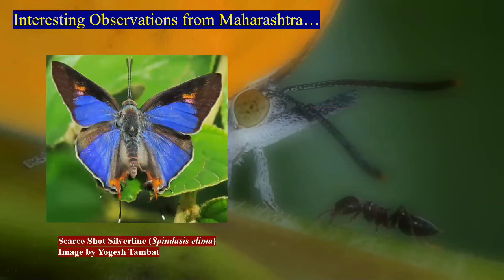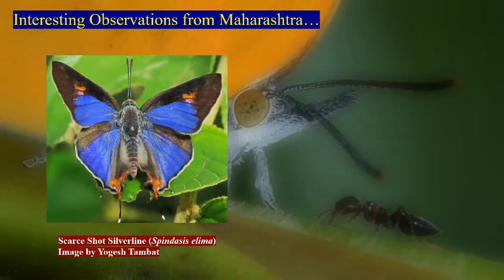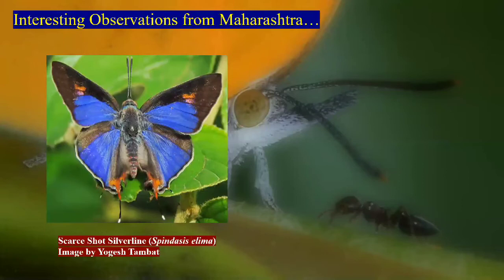Four years back in Nashik, star shot silverline was reported for the first time by Yogesh Tambade. The open-wing shot of the butterfly confirmed its confident presence in that area. It is one of the very rare species of butterflies in India. Like Tarucus, star shot silverline is very difficult to identify without the open wing, making it another challenging species to record.